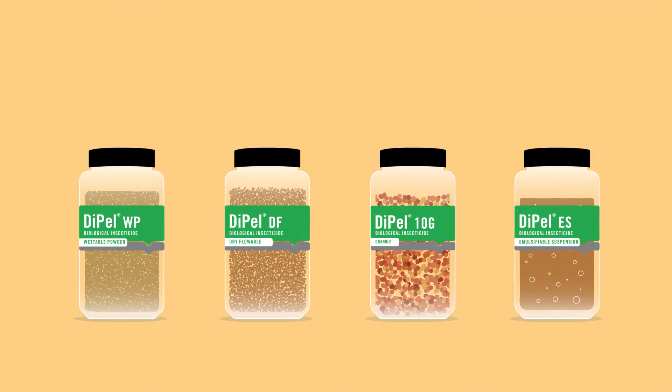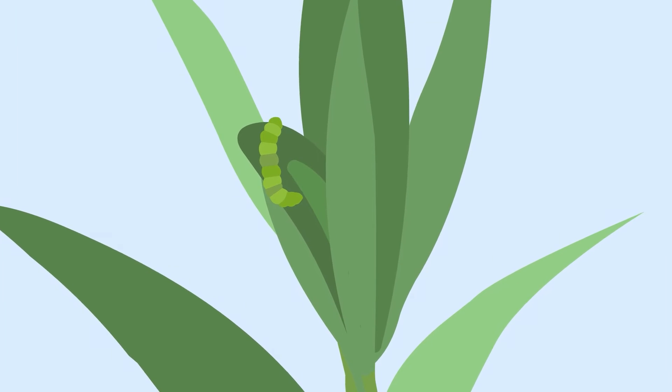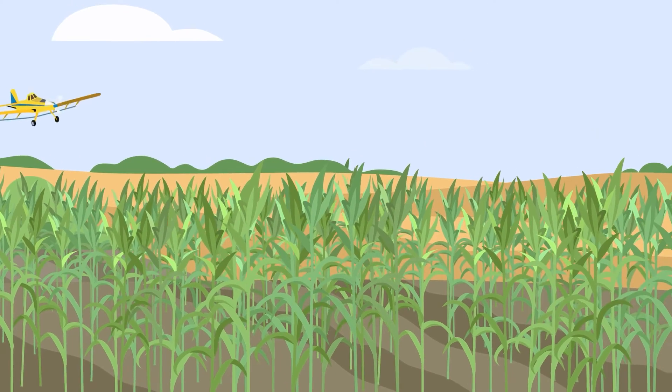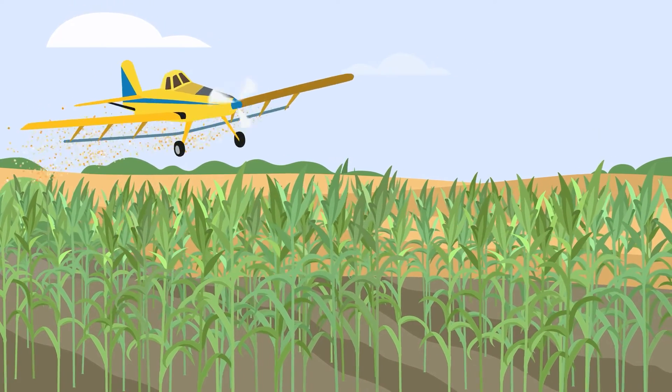Our 10G formulation is produced as a granule for use in corn. When pests hide out in the corn whorl, you need a targeted formulation and application method to ensure your product works effectively.